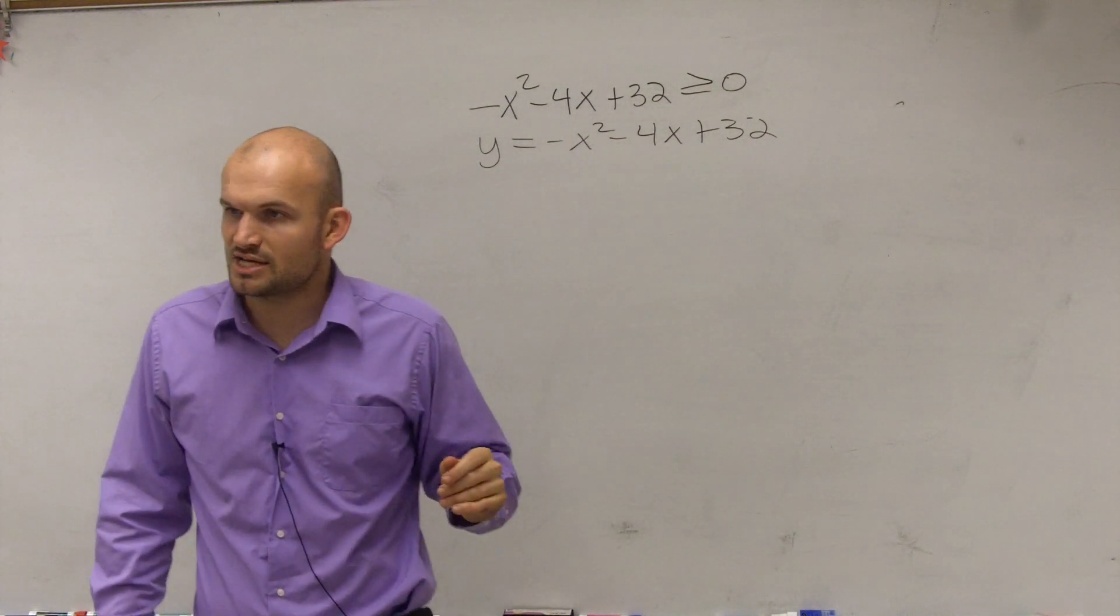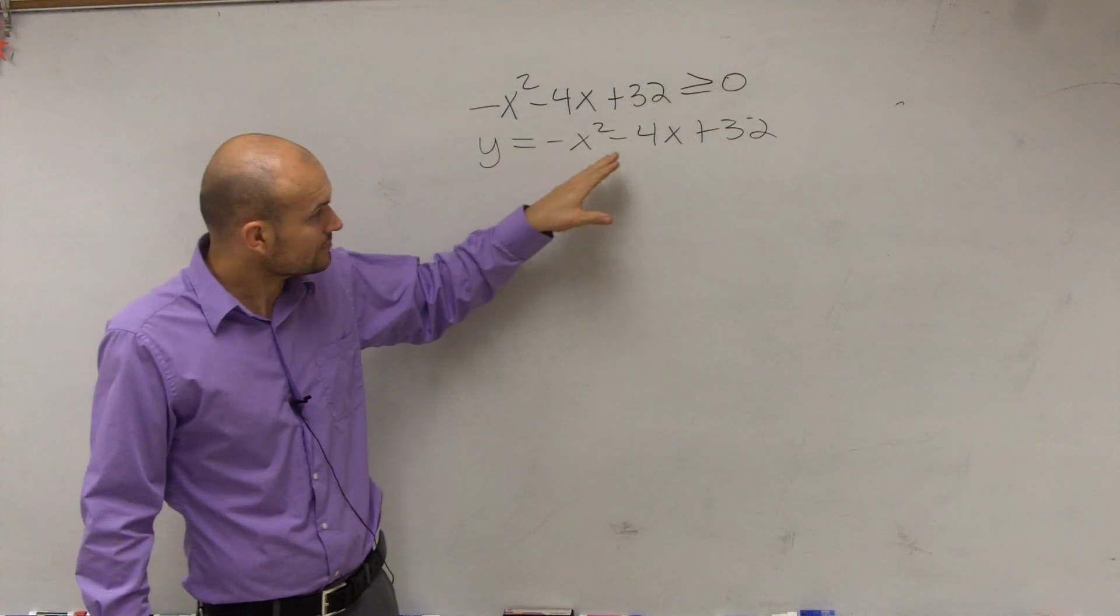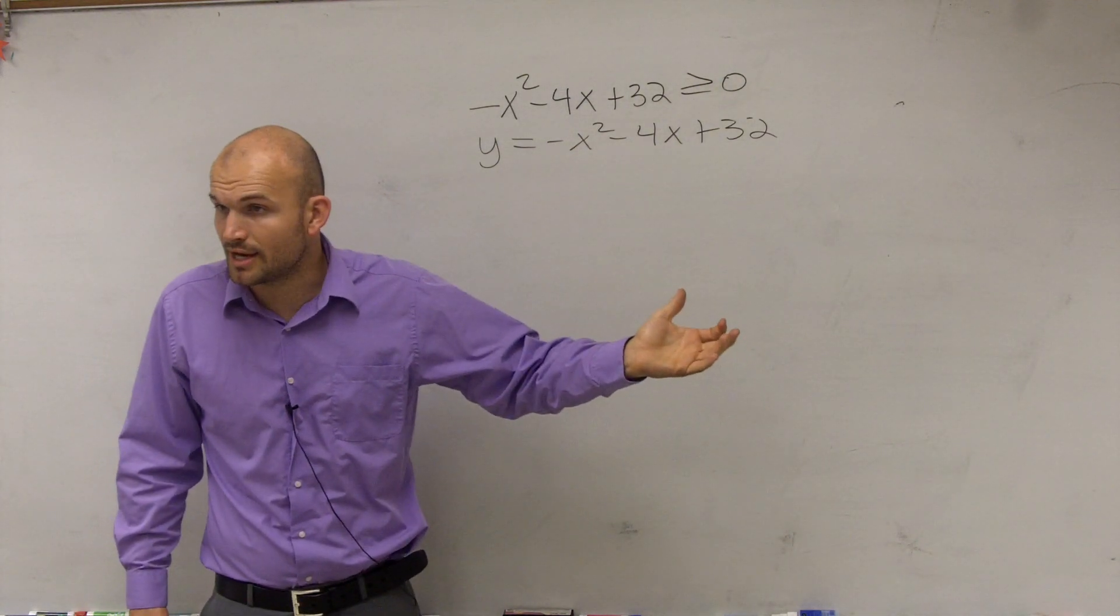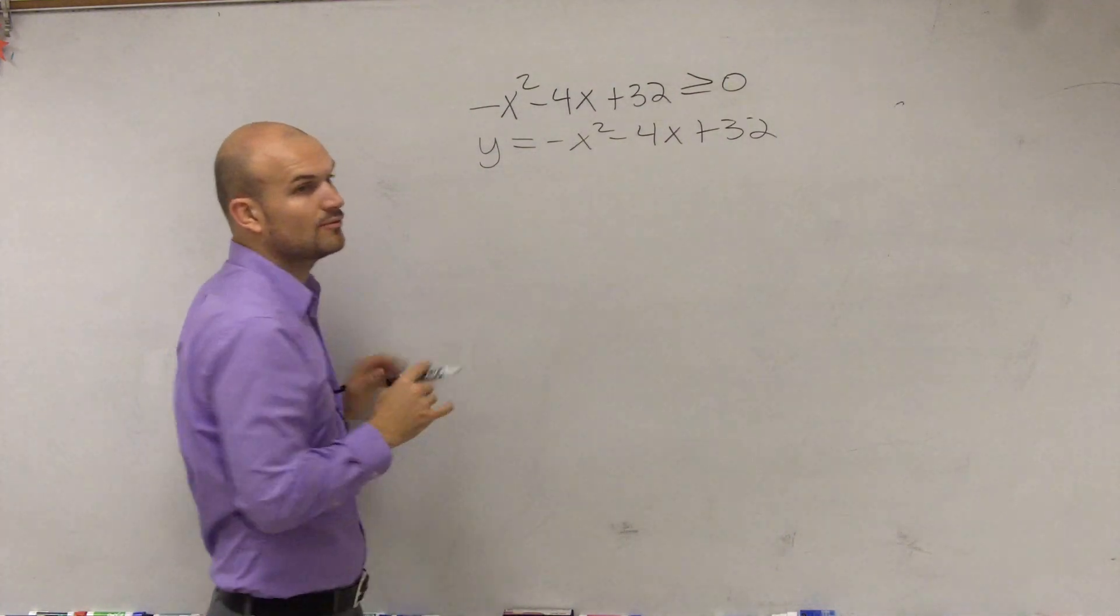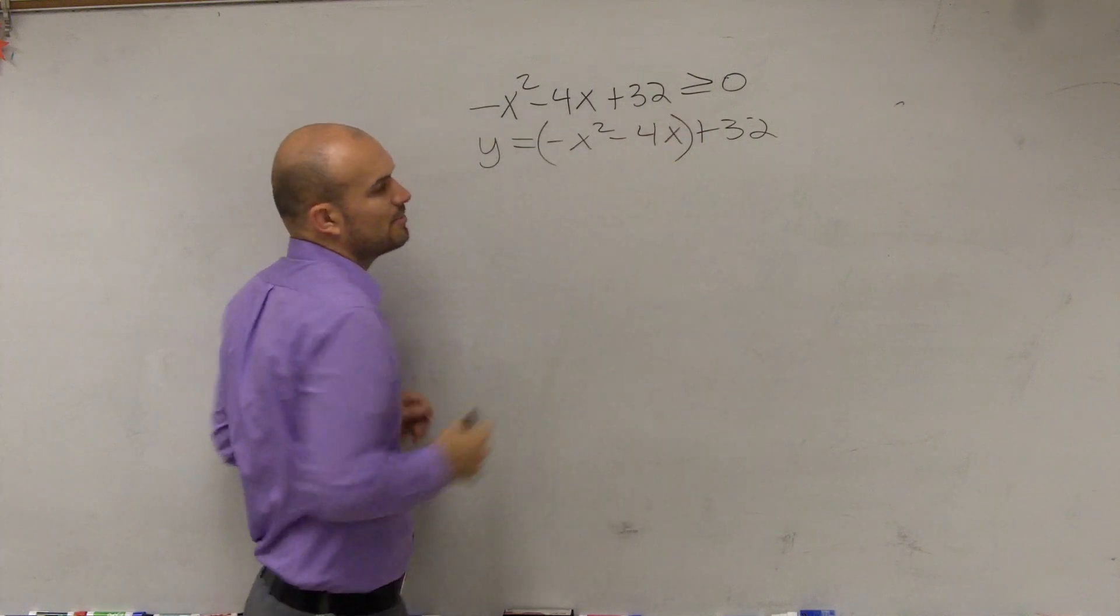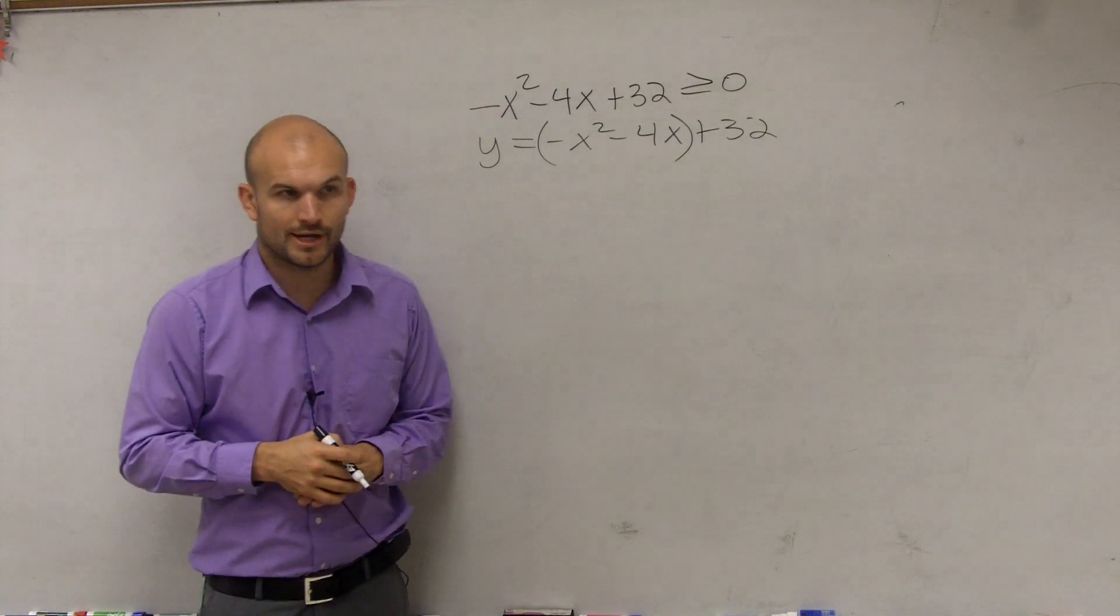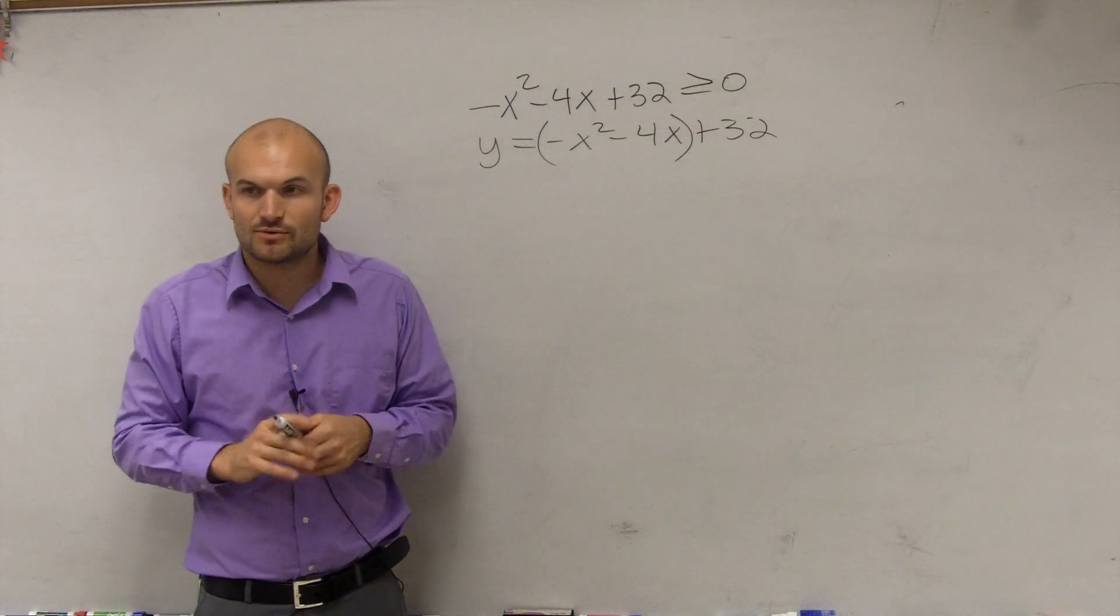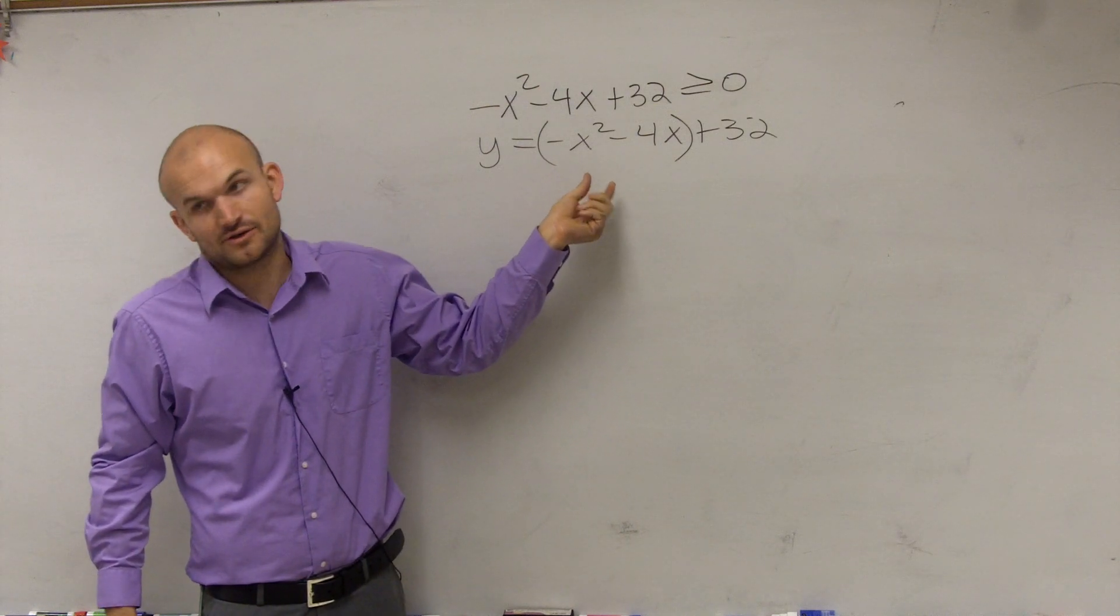Now, to use this in the vertex form, the first thing, Hazel, I'm going to want to do is I'm going to want to complete the square again. So to go ahead and complete the square, remember the first thing I do is put parentheses around my two terms that I'm going to create the perfect square out of. Now, when completing the square, it's very important. Remember when there was a number in front of the x squared, we had to factor it out? Because you can only complete the square when your a is equal to 1.